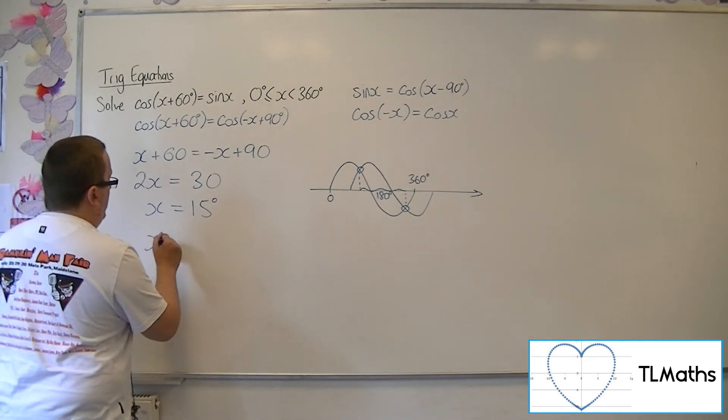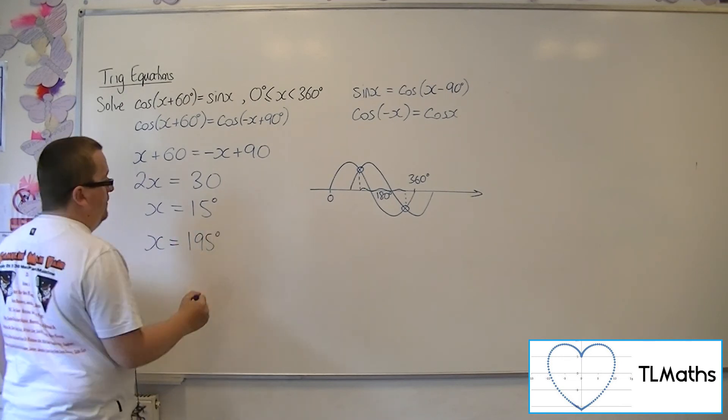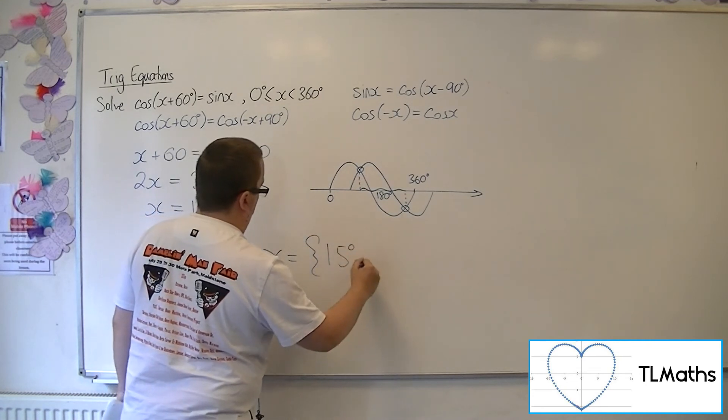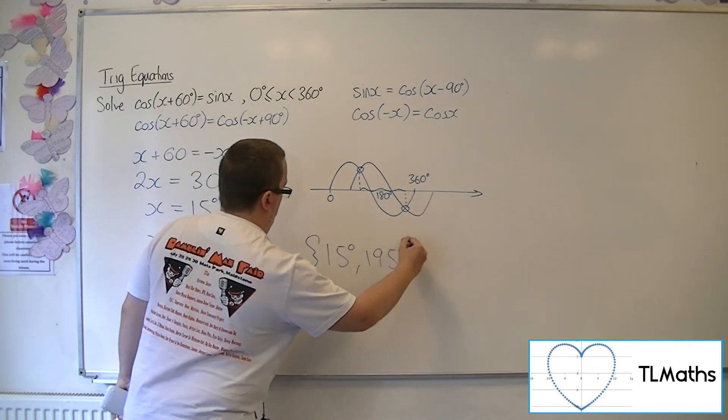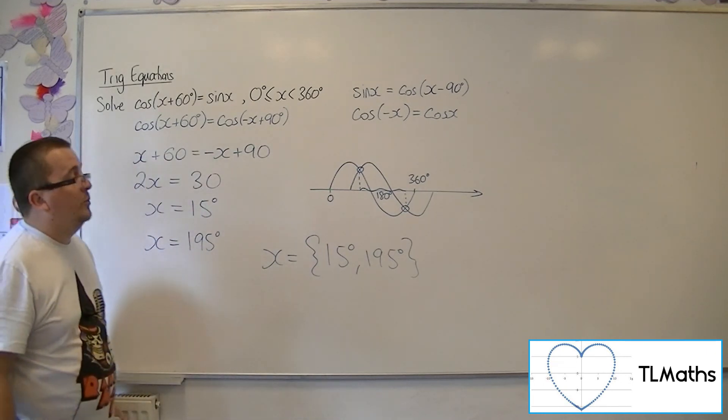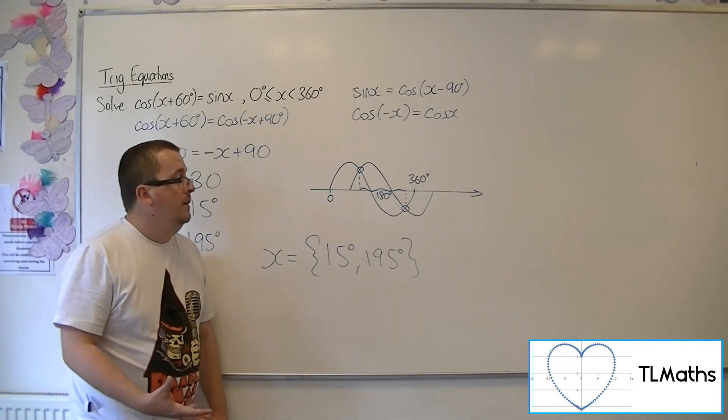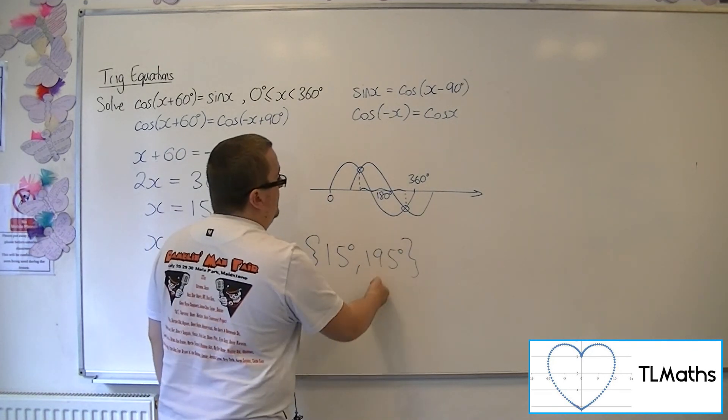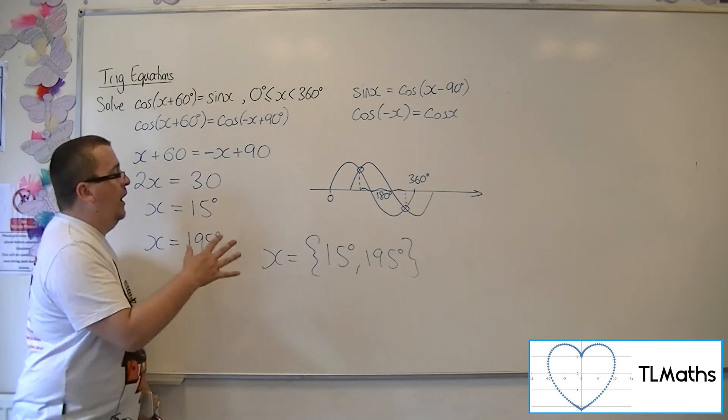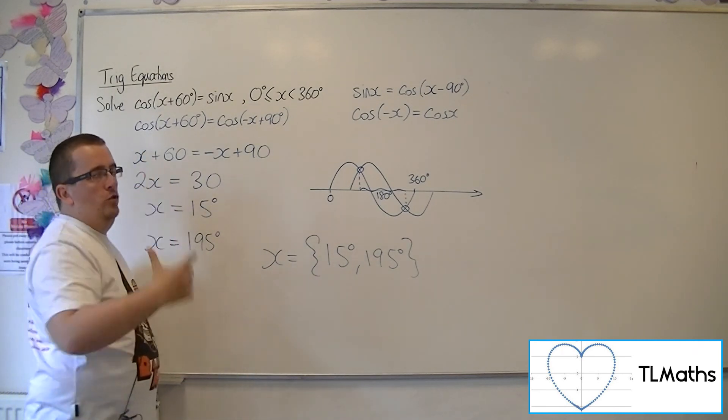So the second solution is 195 degrees. And they are the two solutions that I would be expecting between 0 and 360. Now of course, you could add another 180 to that, but you'll go beyond the 360 mark. So they are the only solutions to the original problem.